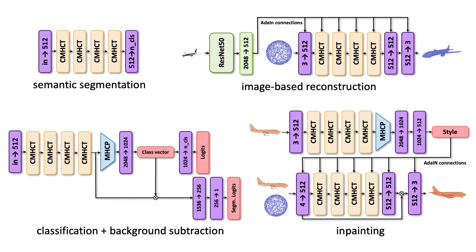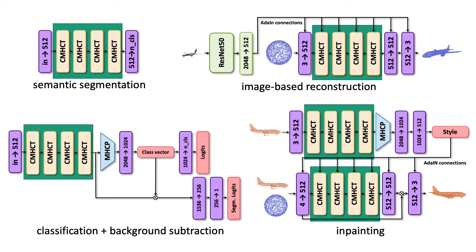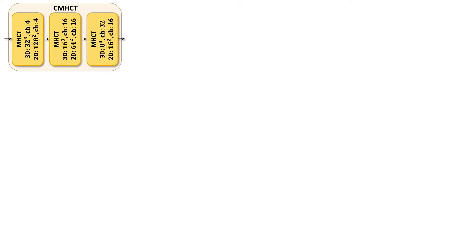The main building block for cloud transformers is the cascaded multi-head cloud transform block. The cascaded multi-head cloud transform block is just a sequence of three multi-head cloud transform blocks with varying number of channels and spatial resolutions.